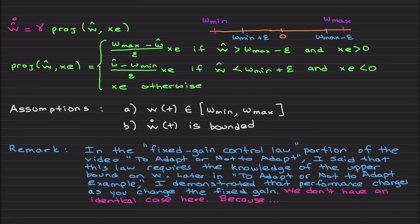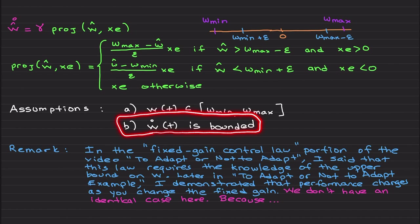I have two assumptions. First, we are assuming the time-varying uncertainty w lives on this domain. If your uncertainty exceeds this domain, the adaptation will be meaningless. Second, we assume ẇ is bounded — this is not a big deal and I have ways to relax this condition.